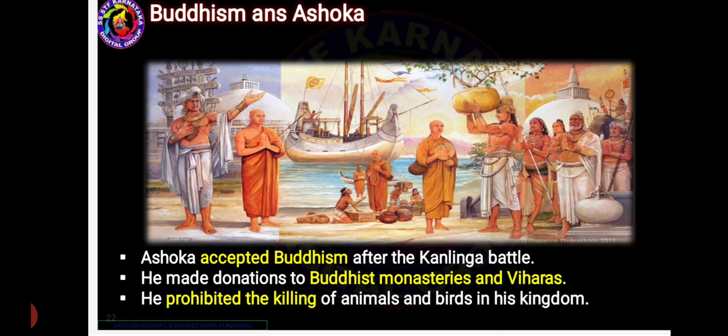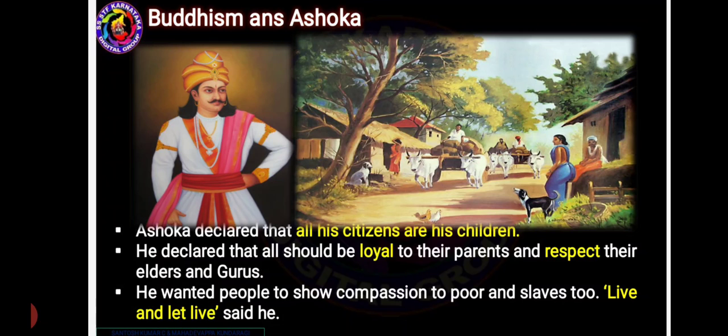Ashoka accepted Buddhism, made donations to Buddhists, monasteries and viharas, and prohibited the killing of animals and birds in his kingdom. He said that all citizens are his children, everyone should be loyal to their parents, respect their elders and gurus, and show compassion to the poor and slaves. He said, 'Live and let live.'